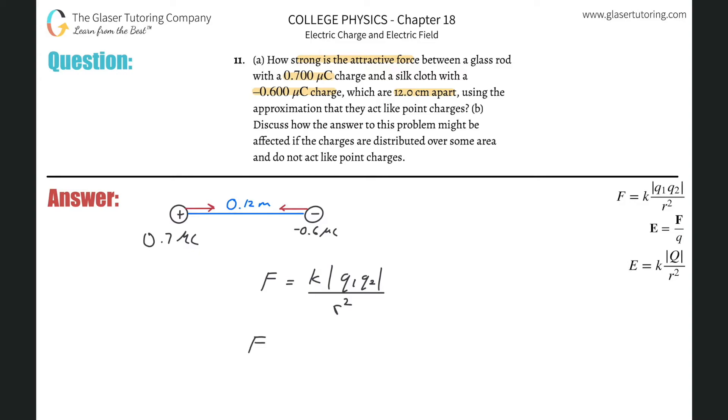So the force here is going to be equal to 8.99 times 10 to the ninth times - I'm just going to plug in all the positive values here - 0.7 times 10 to the minus six coulombs, multiplied by 0.6 times 10 to the minus six coulombs, and then divide that by r, which is going to be 0.12 meters.